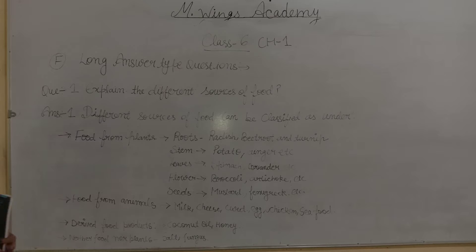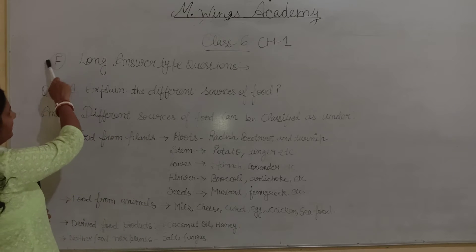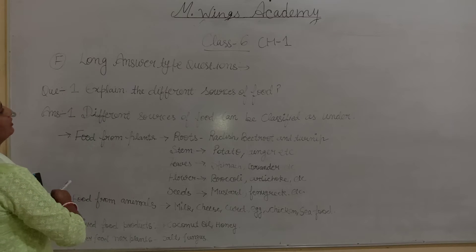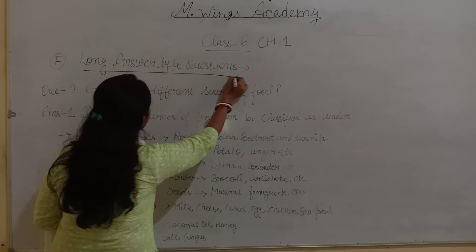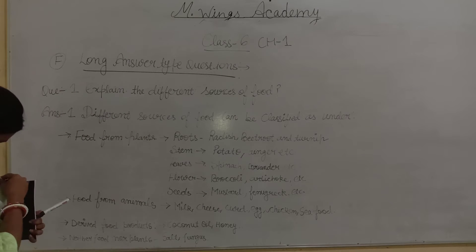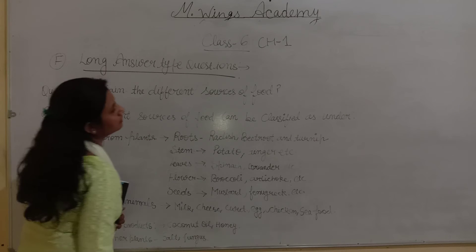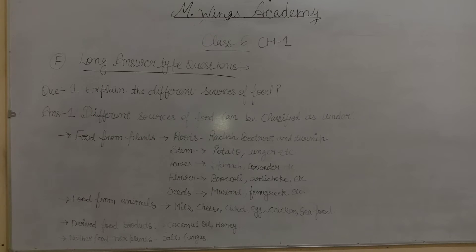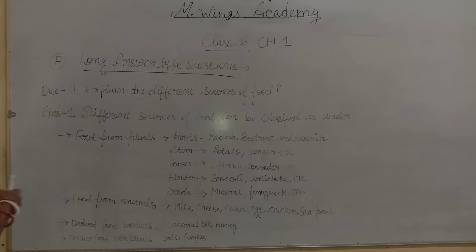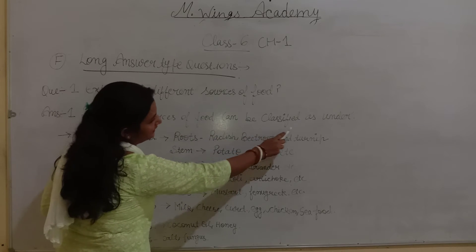First, I will explain to you. Question number 1 is question F — you will check it. Long answer type questions, question number F. The question is: explain the different sources of food. Here is the way to give this answer. Different sources of food can be classified as under.